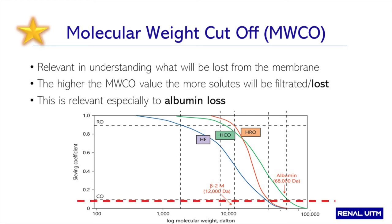Here you can see three different sieving curves: the purple one is the high flux, the green is the high cutoff, and the orange is the high retention onset. High cutoff has the biggest pores, allowing more middle molecules to be filtrated out. However, because the pore size is bigger than albumin, significant albumin will be lost with a high cutoff membrane. When you look at the HRO membrane, because the cutoff is not above the albumin value, there should be negligible albumin loss.